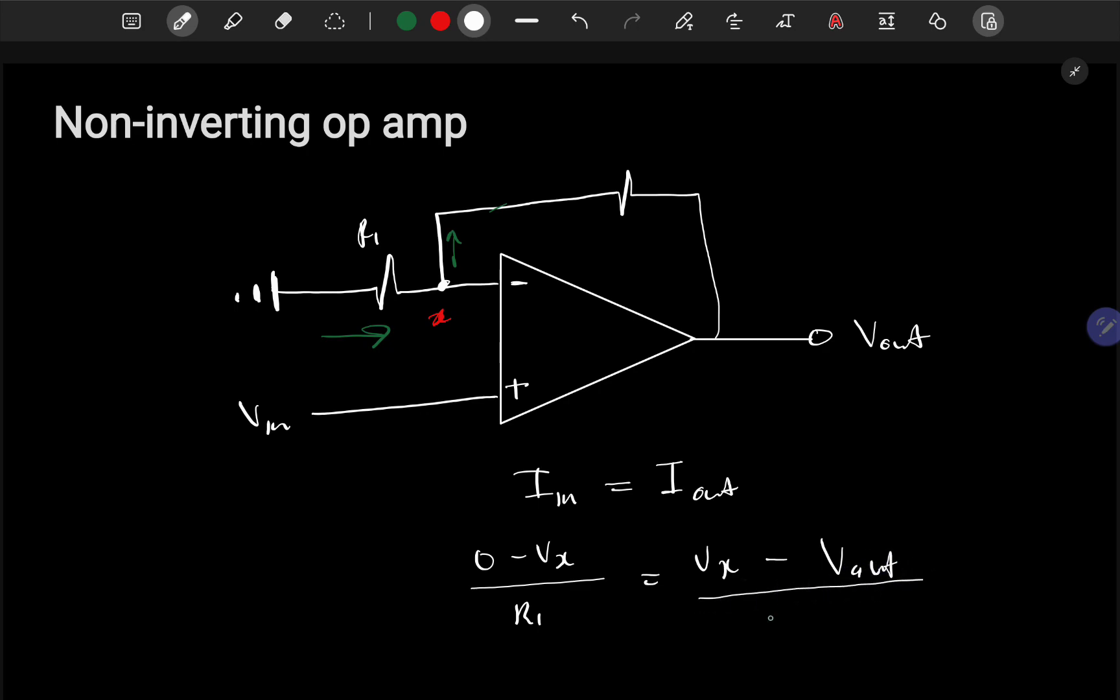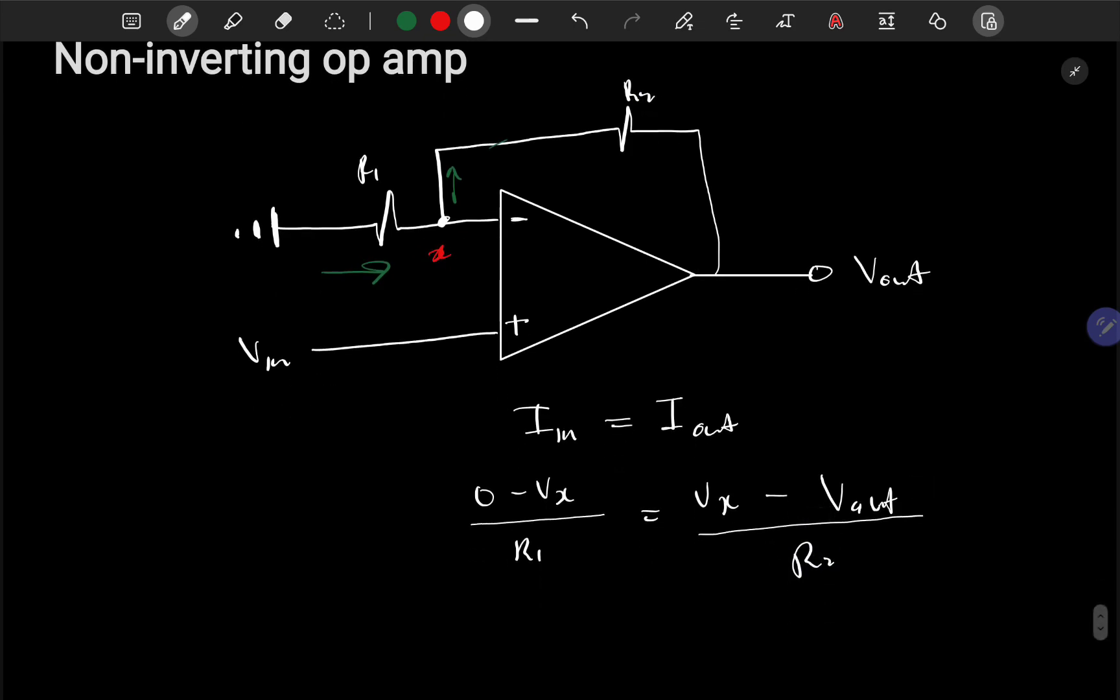Because of virtual grounding, there's literally no potential difference from here to here, so Vx is very close to Vin. We say virtual grounding because the resistance here is very huge.